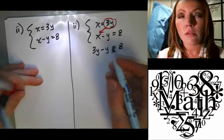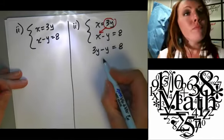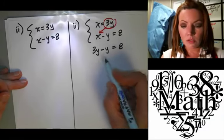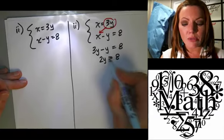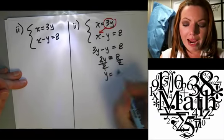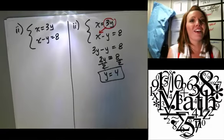Like terms, good. Good, and then what's the last step to solve it? Good, so we get y equals 4. Give it up for Ashley. Good.